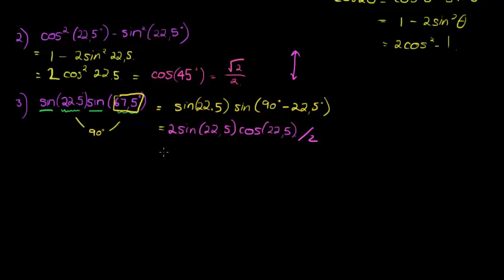And what does that help me? Well, this top one becomes two sine theta cos theta, which is sine of two theta, not two sine, just sine of two theta. And two times 22.5 is 45, okay, divided by two, don't forget to divide it by two.